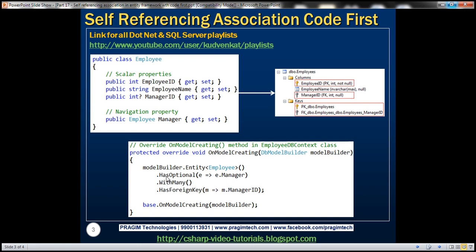To achieve that zero-or-one multiplicity, we use the HasOptional method, specifying E.Manager as the navigation property. On the other end of the relationship, a manager can have many direct reports, so we use the HasMany method to specify the many multiplicity. We then specify ManagerID as the foreign key using HasForeignKey, and all of this is applied to the Employee entity.